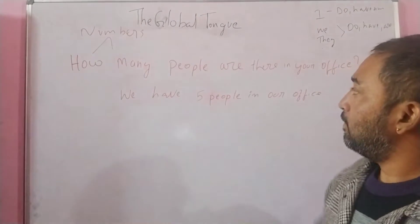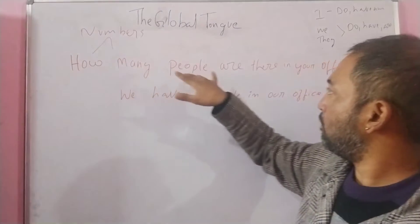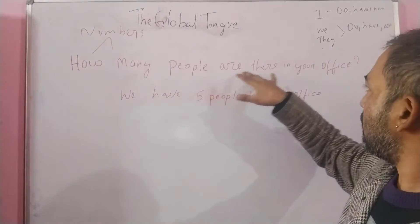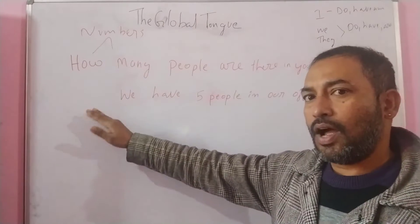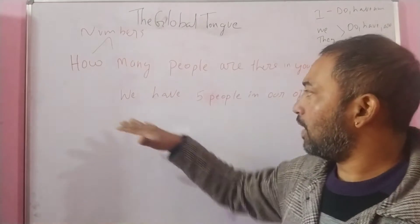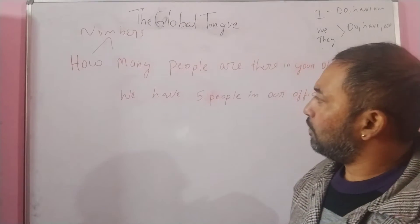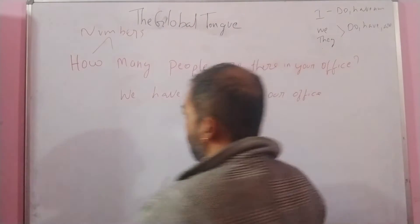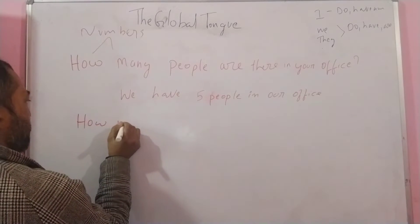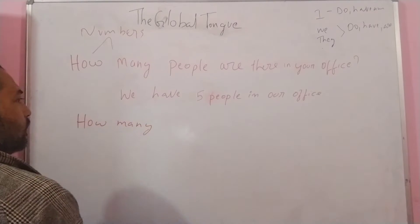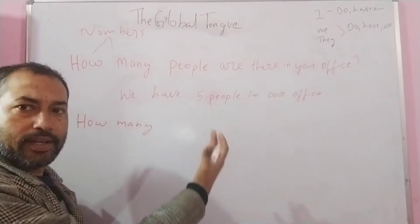I have a question written down on the board: 'How many people are there in your office?' And how do we reply? We reply: 'We have five people in our office.' Whenever you use 'how many,' make sure you're using it correctly. Instead of 'people,' you could use anything there.